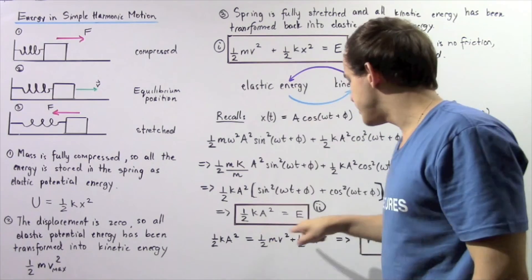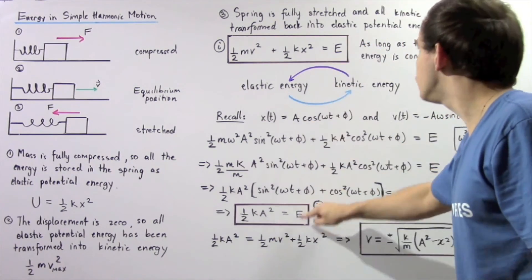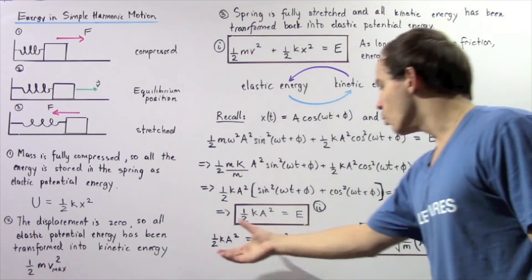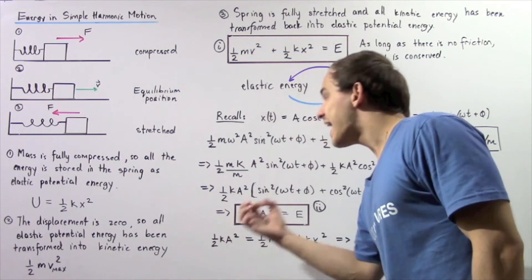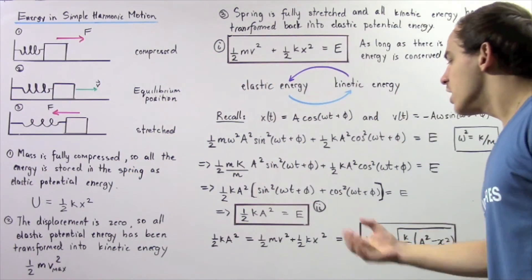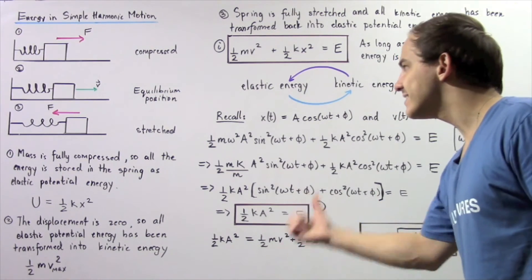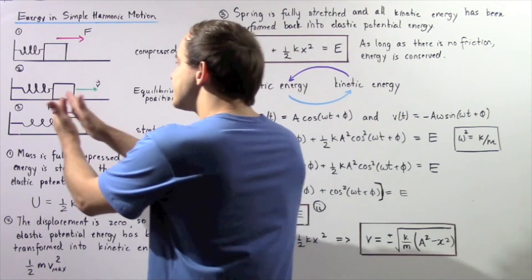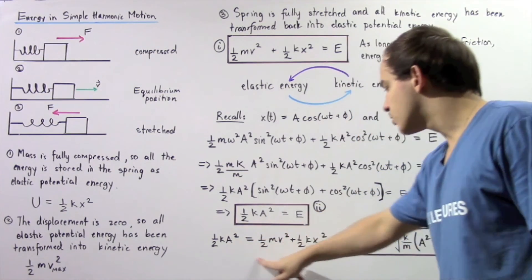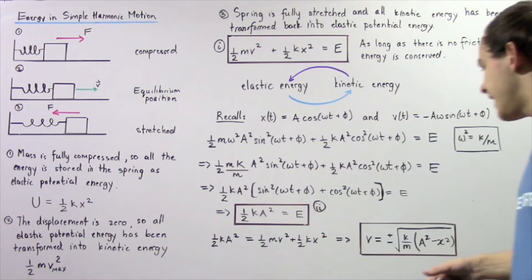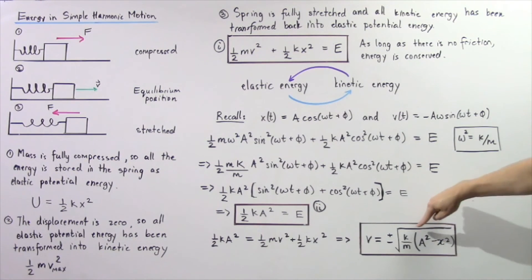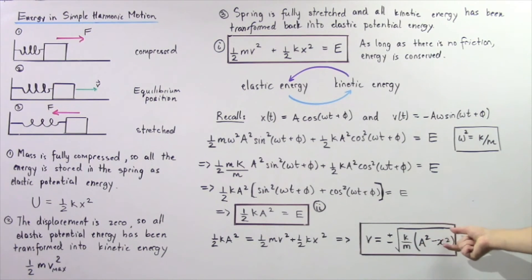Calling our two expressions equation 1 and equation 2, and noting they both equal E, we can set them equal to each other. This states that the total energy when the system is at maximum compression or extension equals the sum of elastic and kinetic energy at any other position during oscillation. Rearranging and solving for velocity gives a useful formula relating velocity, spring stiffness constant k, mass m, displacement x, and amplitude A.